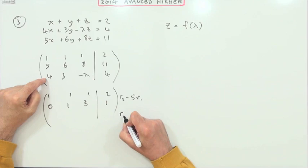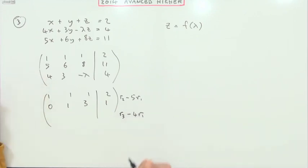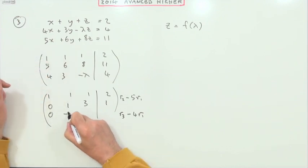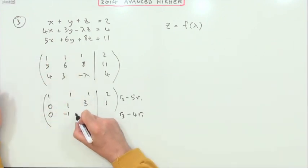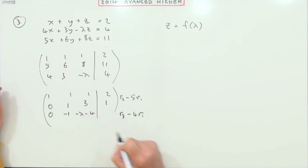Then for this one, I'll take row three and subtract four lots of row one. So that'll be a zero, three take away four will be negative one, and that'll be negative lambda take away four, and that'll be four take away eight, which is negative four.